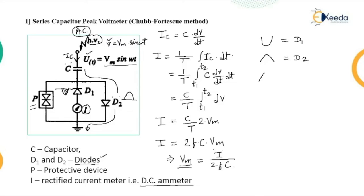This is a disadvantage of this particular method: both the positive half cycle and negative half cycle must be symmetrical. If the positive and negative half cycles are not symmetrical, then there is an error in the meter, and this method will not be suitable. Even if the input waveform has more than one peak — that is, multiple maximum values — then again this method fails.